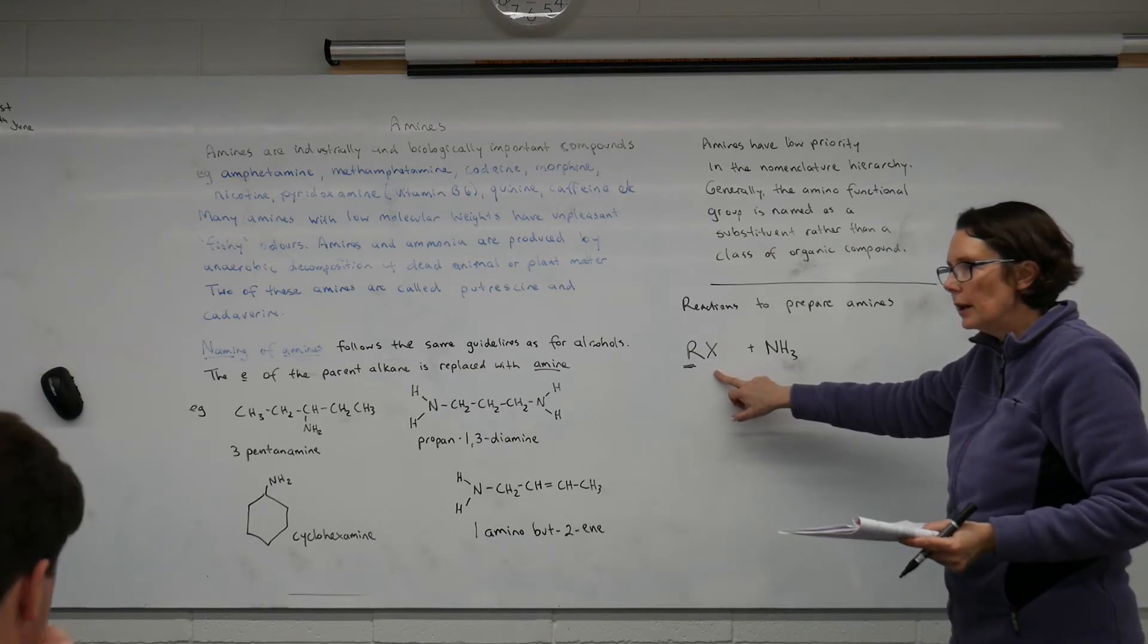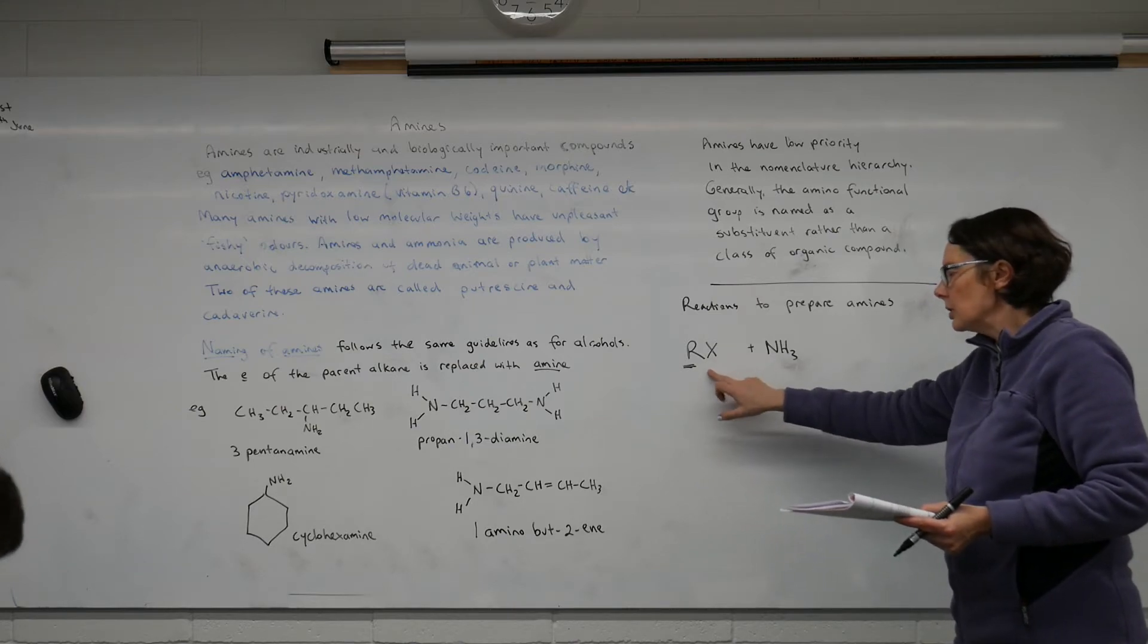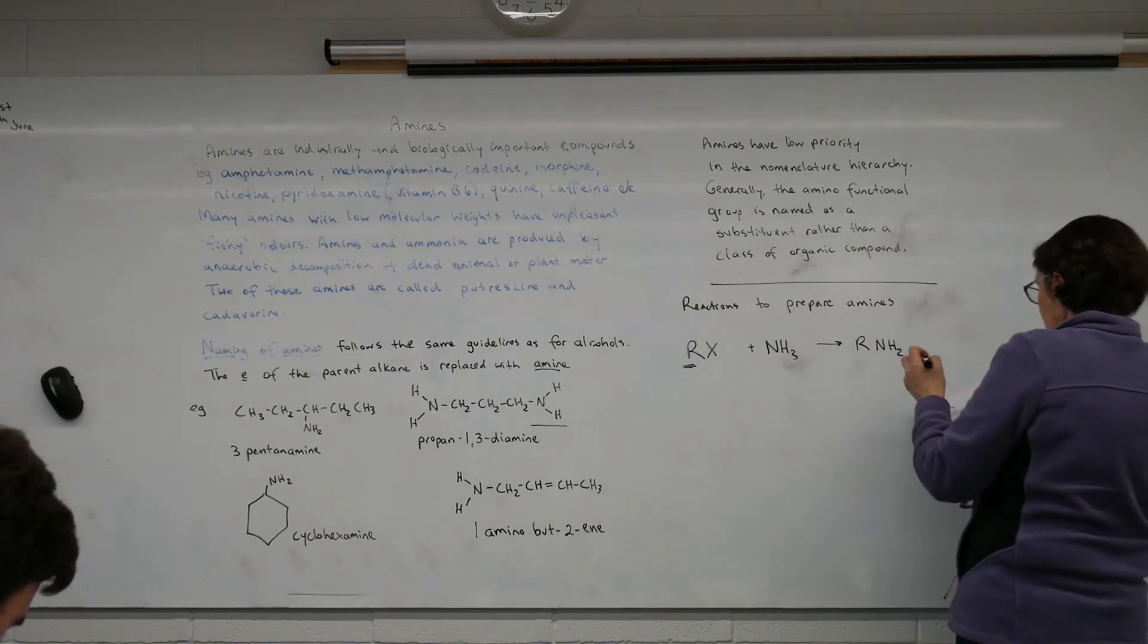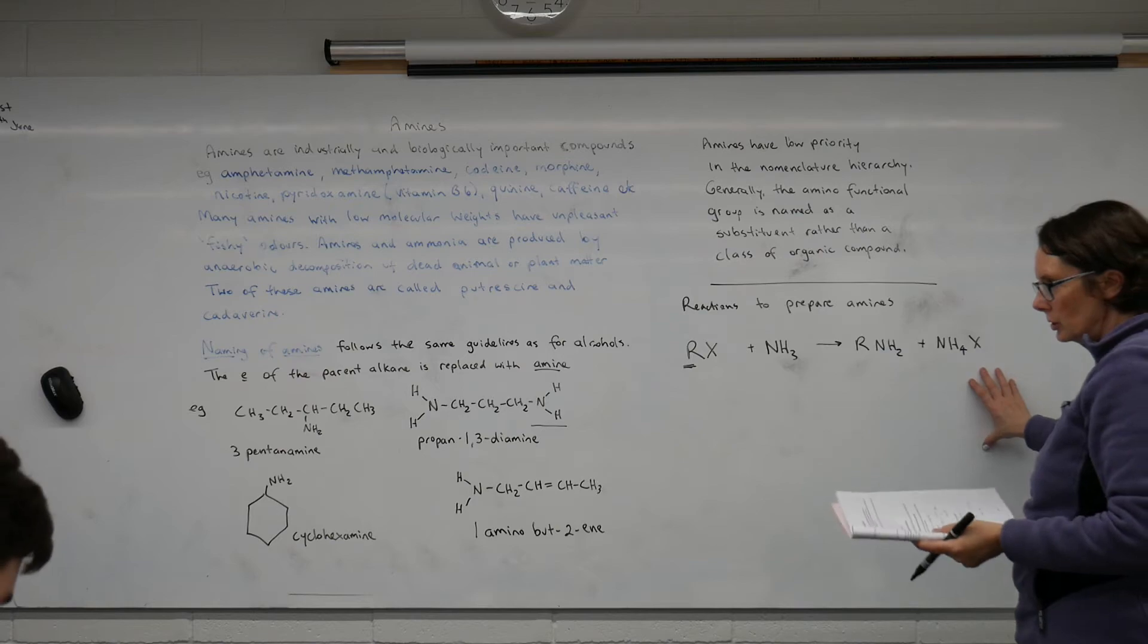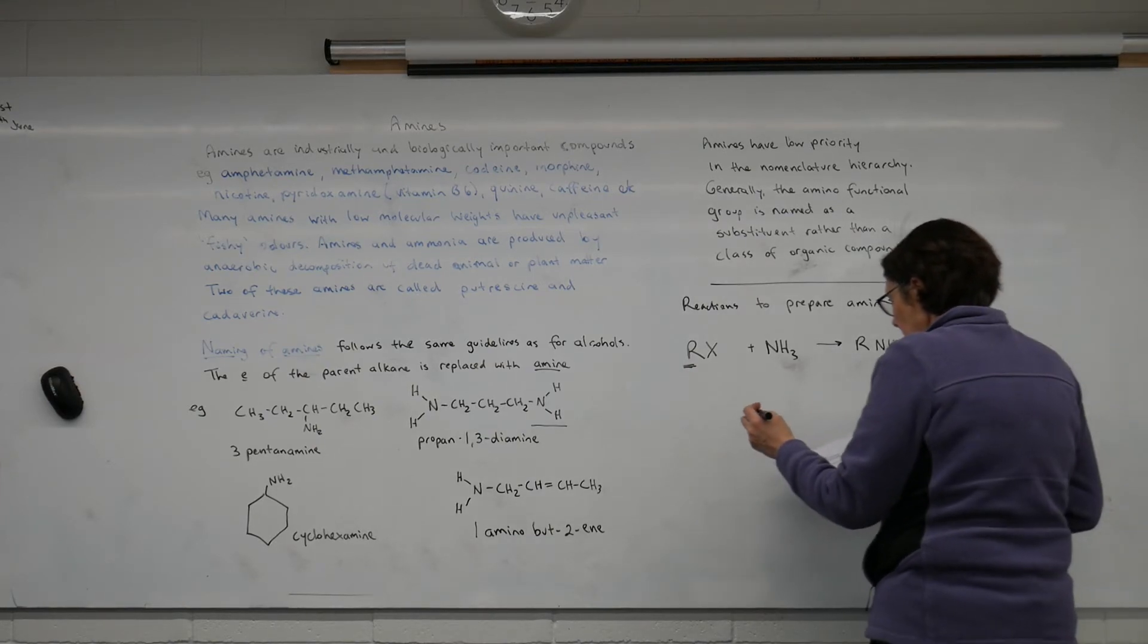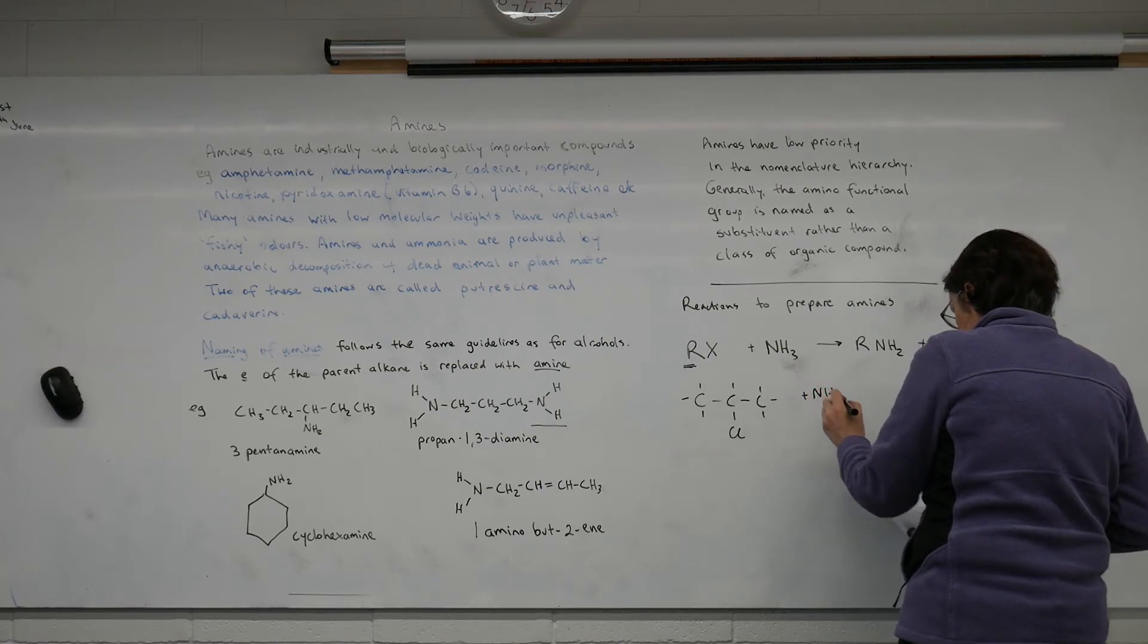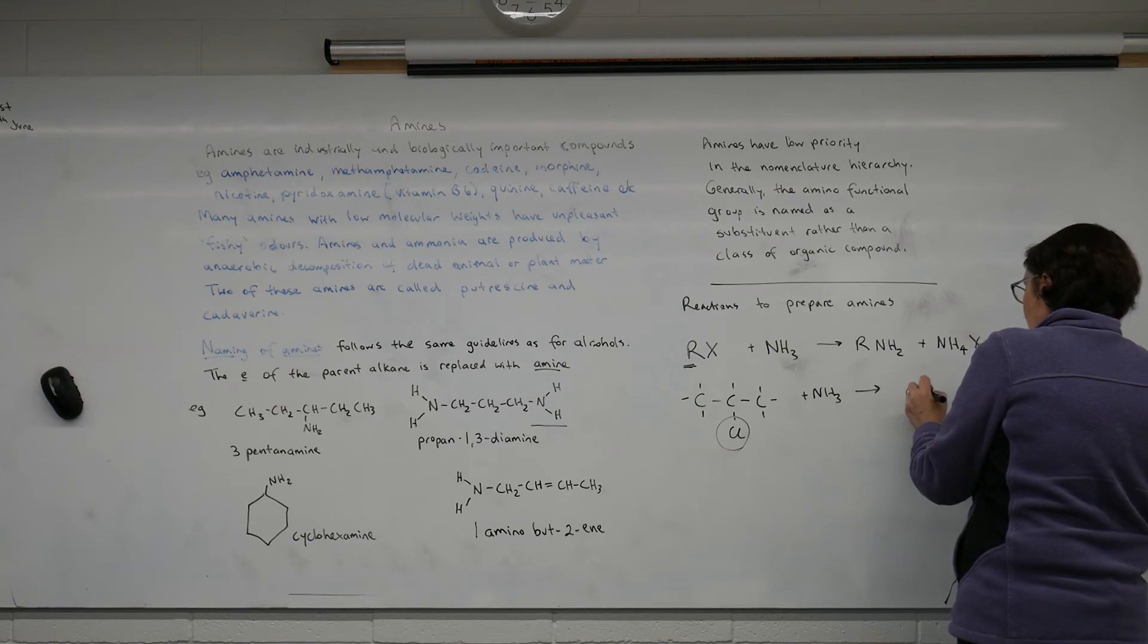And just like before when we were looking at our preparation of the alcohol, it doesn't matter where the halogen is, but wherever it is will be the site of reactivity for this reaction. And so what are we going to produce? This is obviously the amine. NH2 is the amino group there. And we've taken off a hydrogen as well to produce an ammonium halogen salt there. We've got our chlorine there. This is where our amino group will be positioned on our molecule after the reaction.